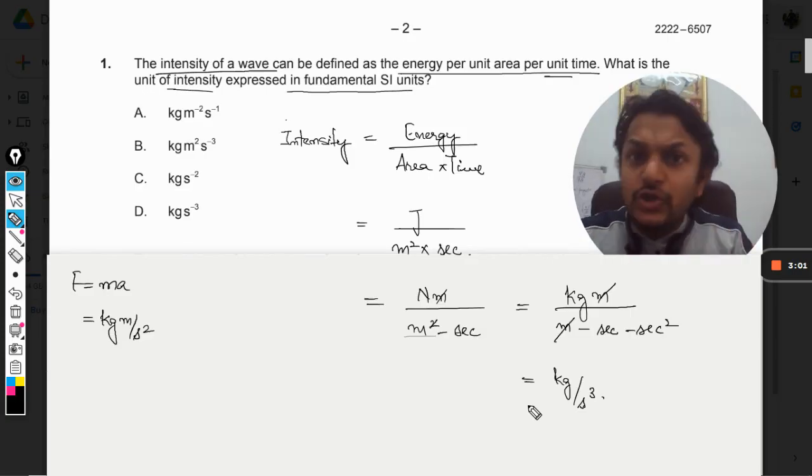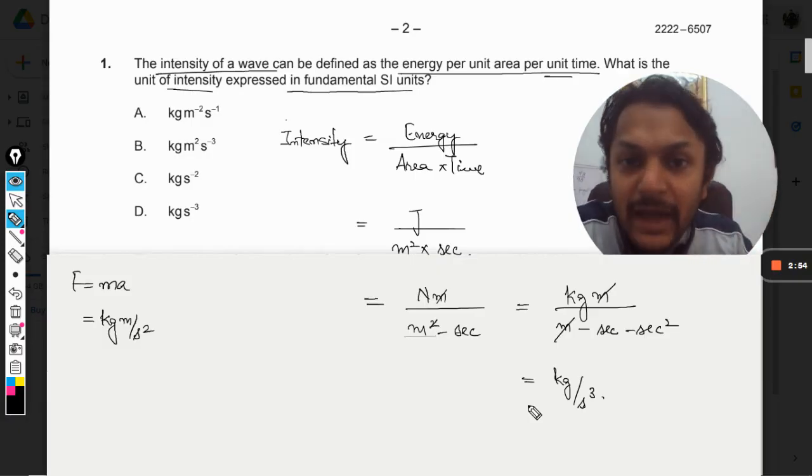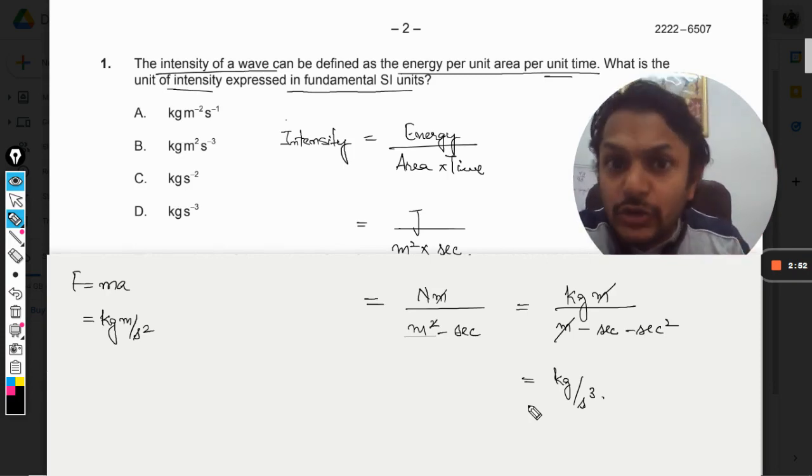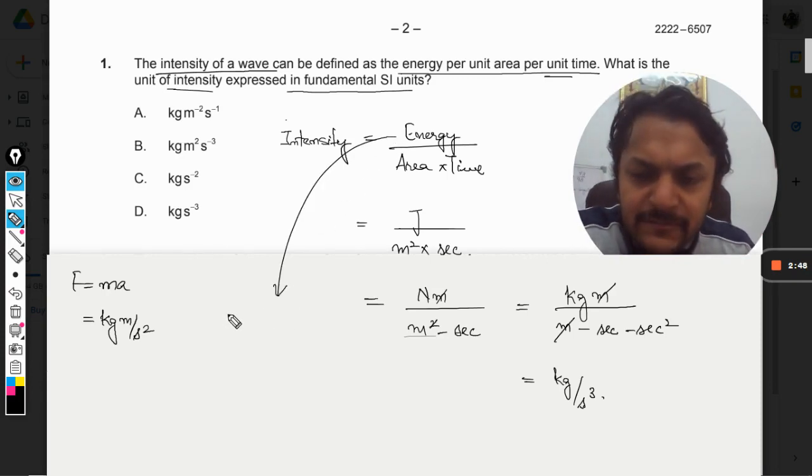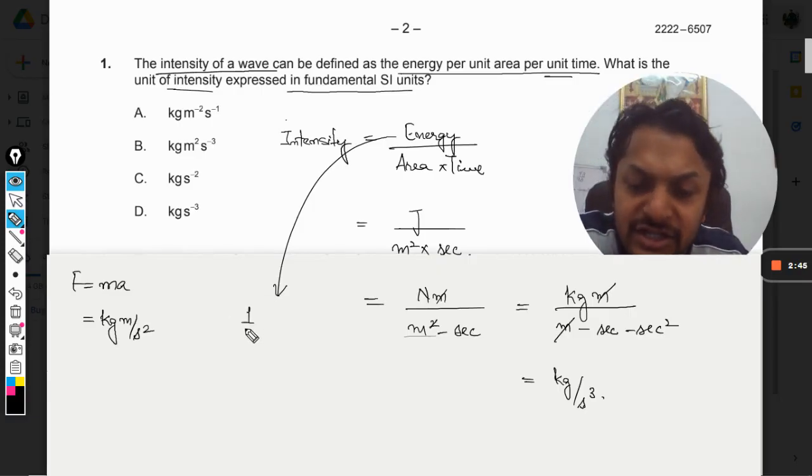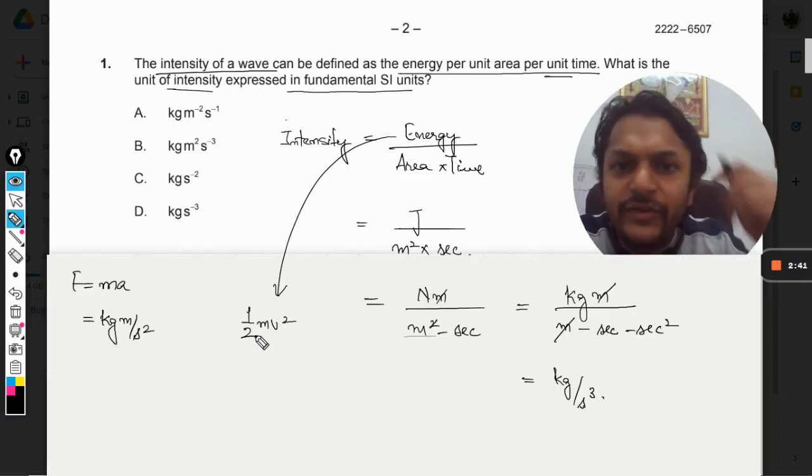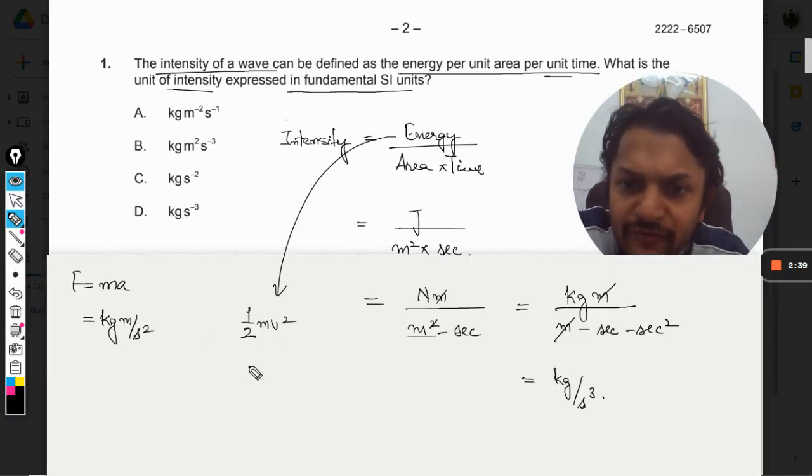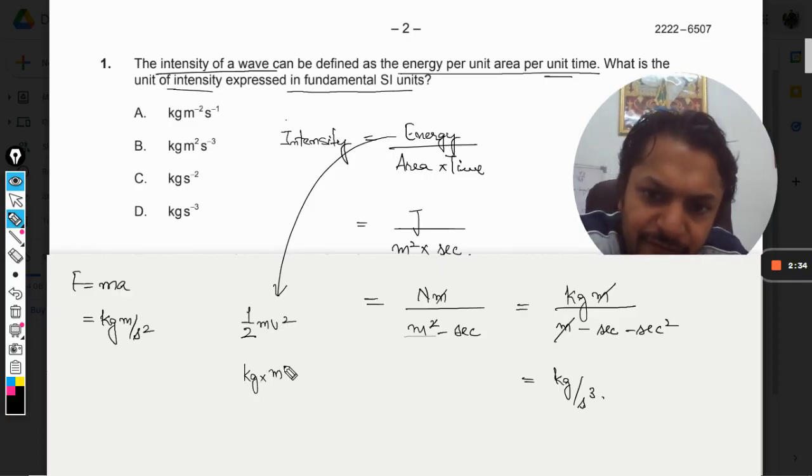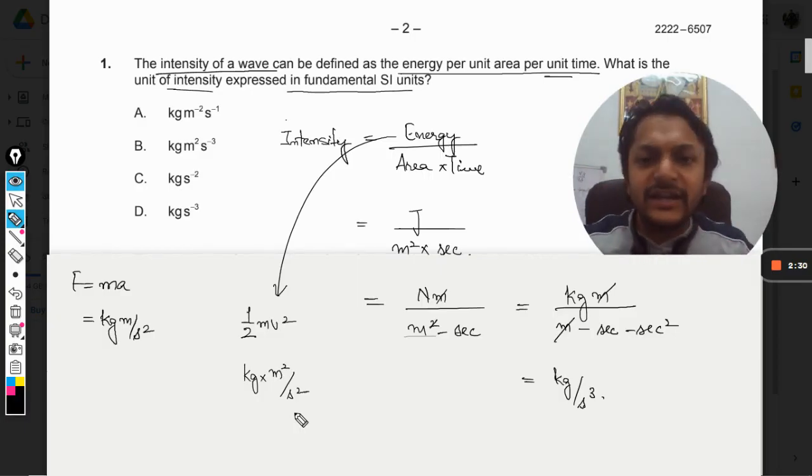But instead of that also we could have found energy in some other manner. For example, instead of joule we could have used that this energy will be like for kinetic energy, half mv square. So what will be the unit of energy? Instead of joule you could have taken kg for mass, meter per second for velocity, so it will become meter square per second square.